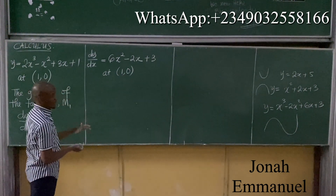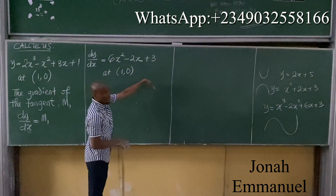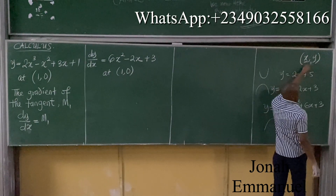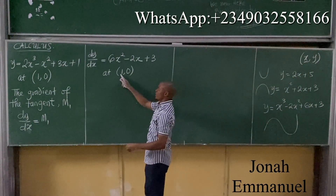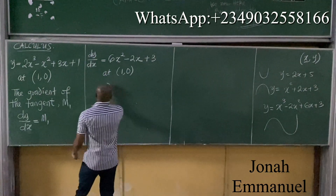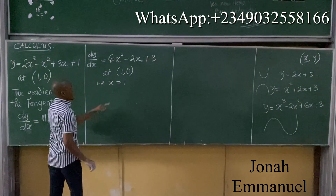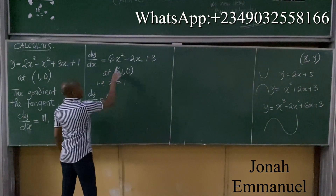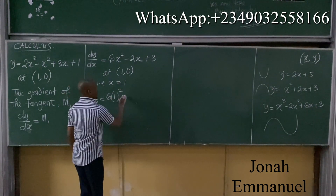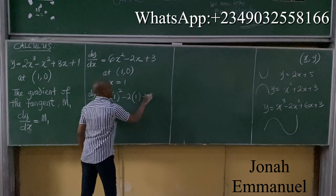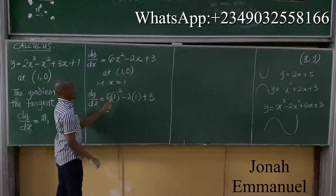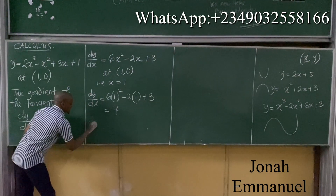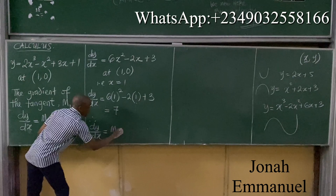If I look at this, I have only values of X, not Y. And don't forget, in a coordinate (X, Y), the first value is always X and the second is Y. So, given the coordinate, X is equal to 1. Substituting X = 1: dy/dx equals 6(1²) minus 2(1) plus 3, which gives 6 minus 2 plus 3 equals 7. Therefore dy/dx, which equals M1, is equal to 7.